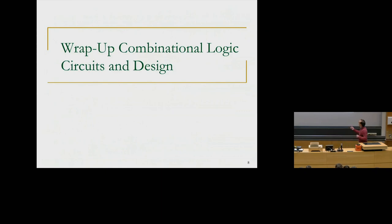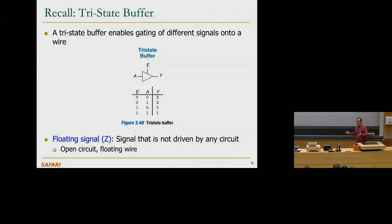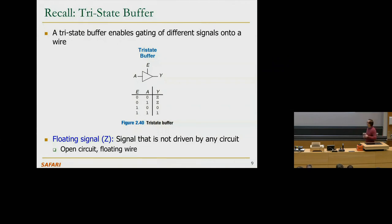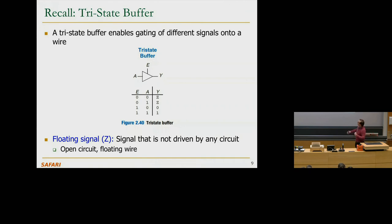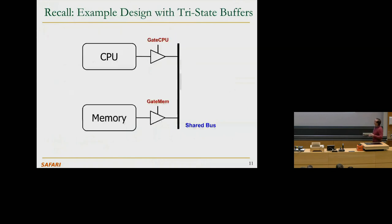I'm going to start by wrapping up combinational logic circuits. We discussed tri-state buffers, decoders, multiplexers, and programmable logic arrays. We're going to use all of those structures later today when we build a memory — you will need a decoder and a multiplexer when building a memory. Tri-state buffers enable gating of different signals to a single wire, which was useful for a shared bus interconnect between CPU and memory.